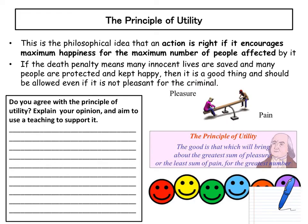One thing you need to be aware of for your GCSE is the principle of utility. This is an ethical principle put forward by Jeremy Bentham — a philosophical idea that an action is right if it encourages maximum happiness for the maximum number of people affected by it. We can apply this to things like the death penalty. If the death penalty means that innocent lives are saved and many people are protected and kept happy, then it could be seen as a good thing and should be allowed, even if it's not pleasant for the criminal. On your piece of paper, explain whether you agree or disagree with the principle of utility, considering both problems and advantages.